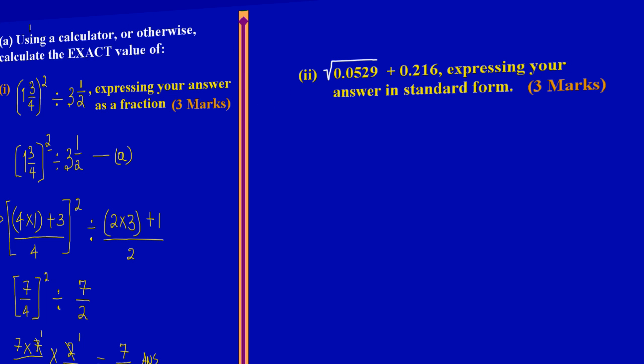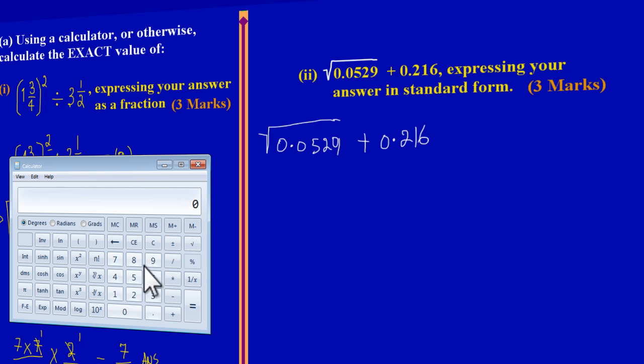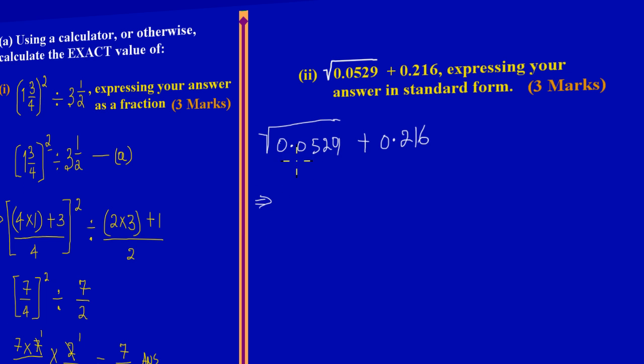Let me just rewrite the problem. I have the square root of 0.0529 plus 0.216. We were given instructions that we can use our calculator. So let's just quickly take out our calculator. What I have here is 0.0529 and I'm taking the square root of that and my answer is 0.23. So this implies when I leave here this is what I'm going to get is 0.23. Now to that I'm adding 0.216.